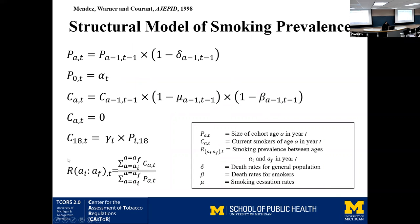The basic equations define the model. P is the population of age A at time T. It's simply the population at age A minus 1 at time T minus 1 times the number of people who didn't die of the specific category. We could include net migration but decided not to. We also have the birth cohort rate at the specific time — this is the population at age zero.